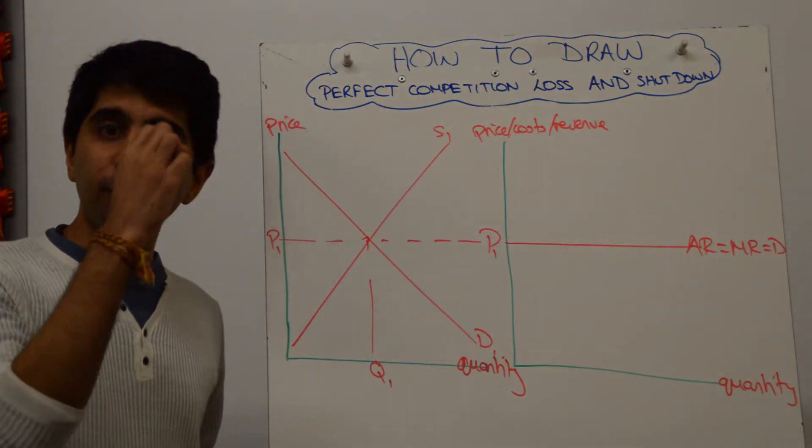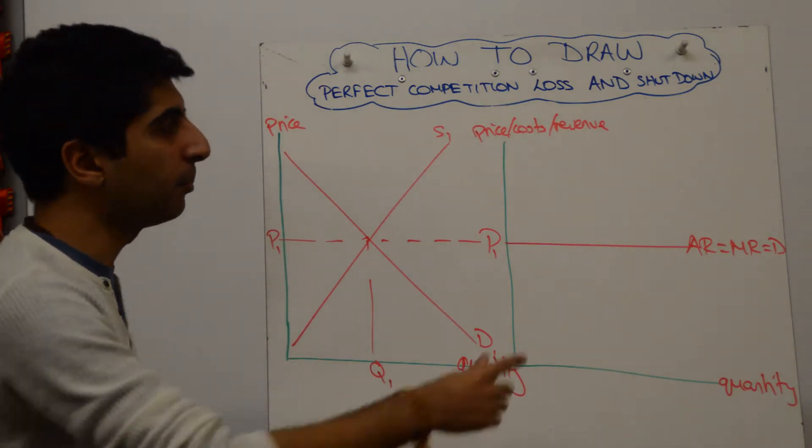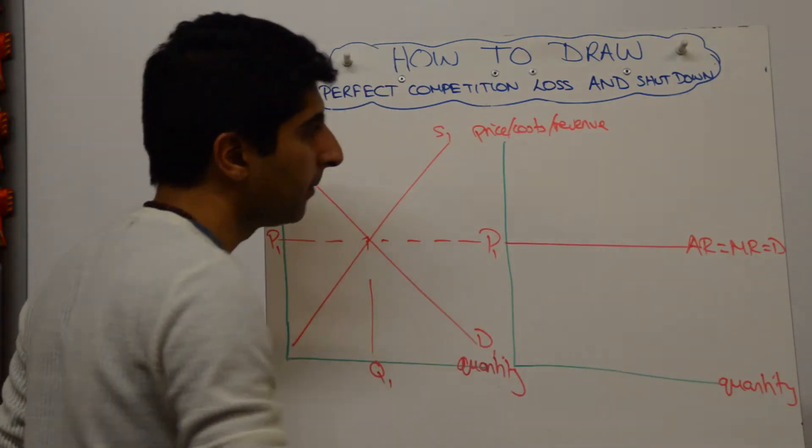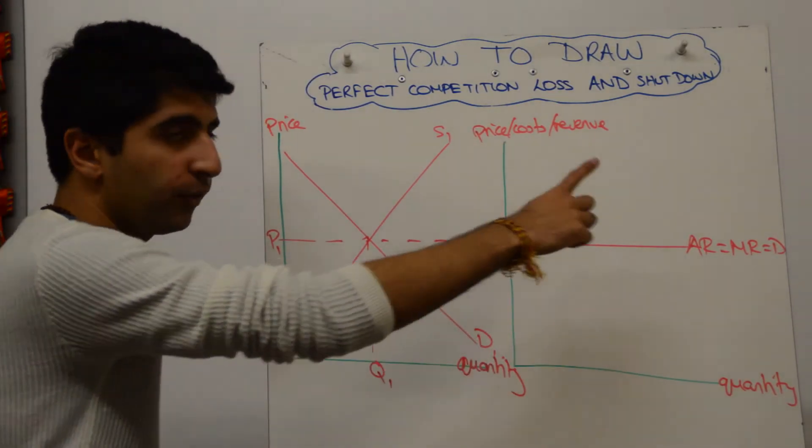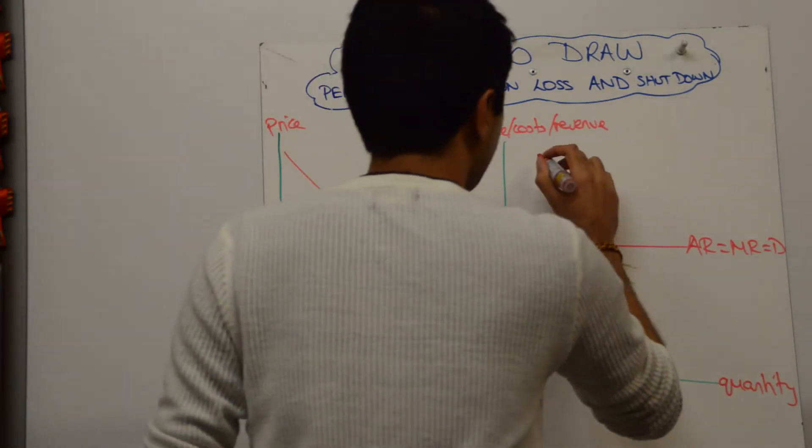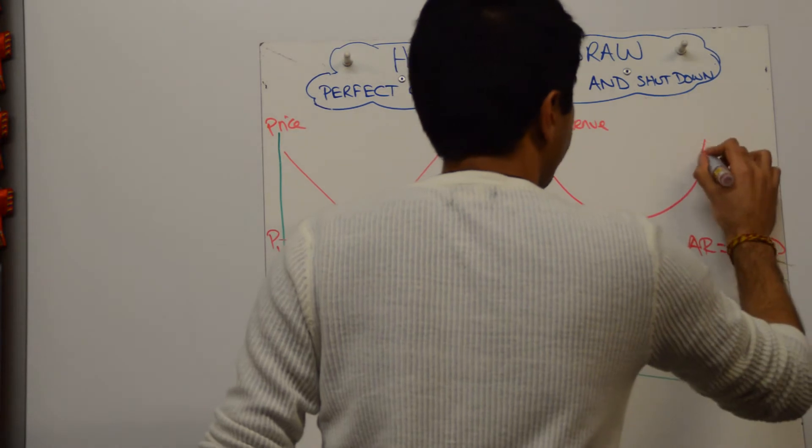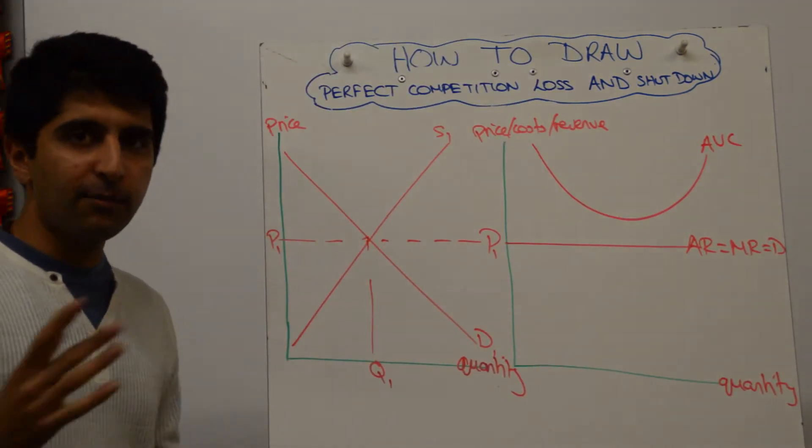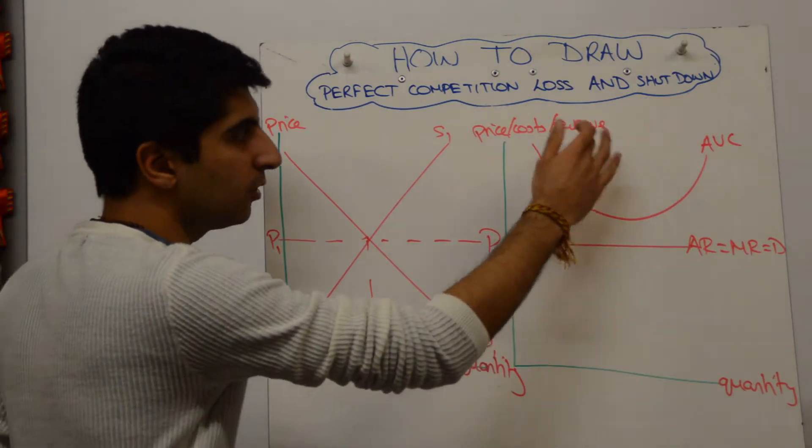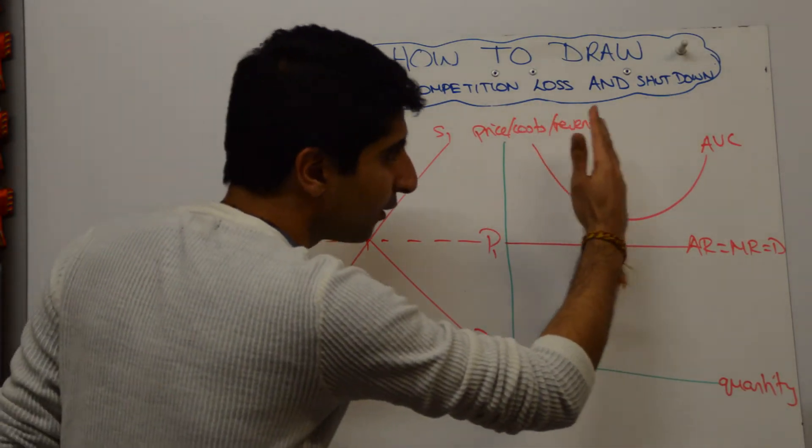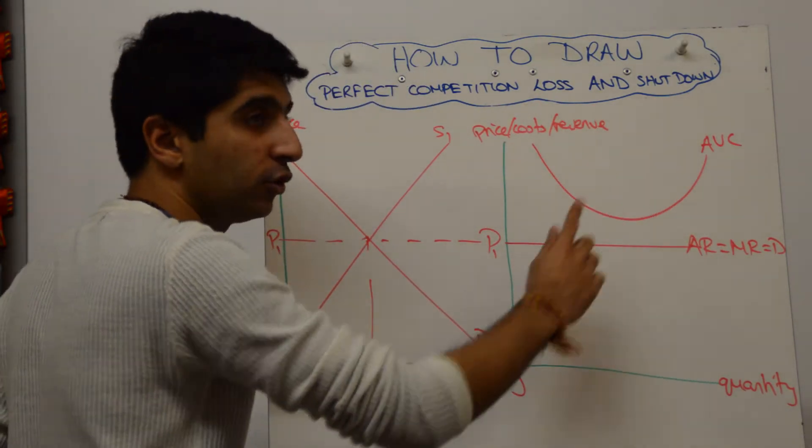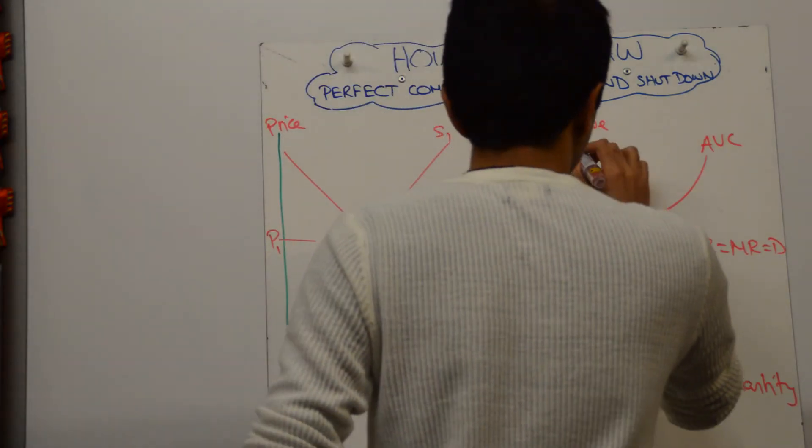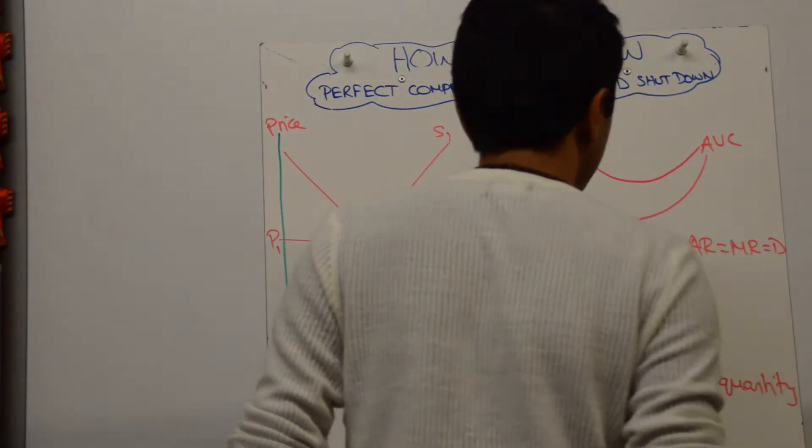AR is going to be less than both AC and AVC, so both need to be above AR. The way to construct this is draw the average variable cost curve first, something like that. Keep the same formalities we're used to, so AC should be drawn in the same shape but slightly to the right of AVC and pulling towards it. Something along these lines will do the trick. That's fine.